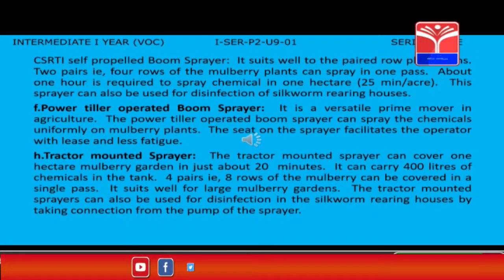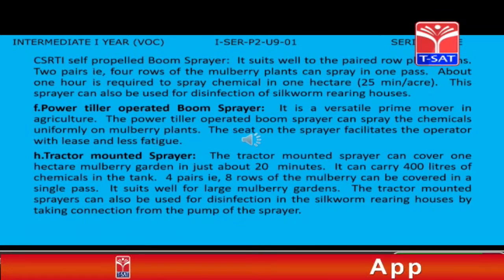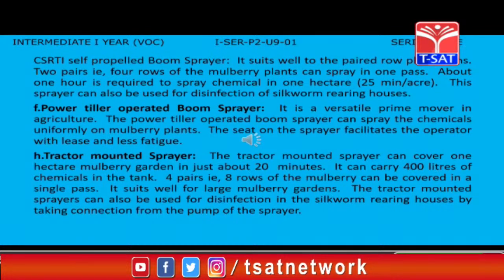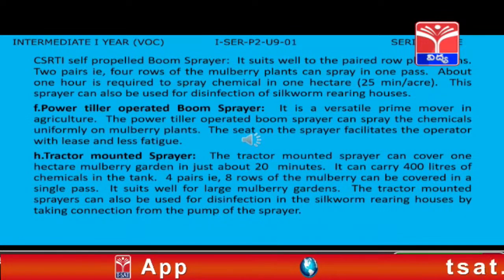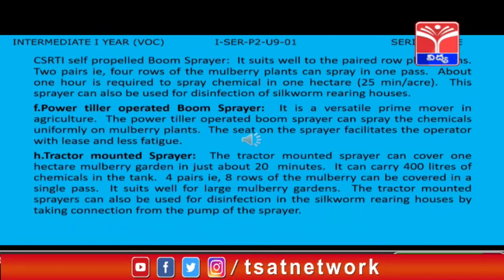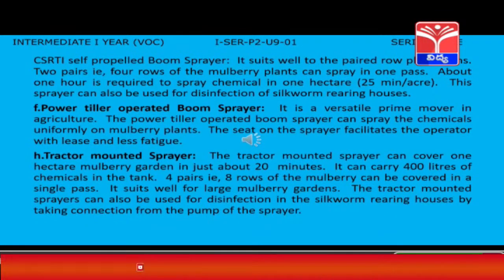Power-Tiller Operated Boom Sprayer: The power-tiller is a versatile prime mover in agriculture. The Power-Tiller Operated Boom Sprayer can spray chemicals uniformly on mulberry plants. The seat and sprayer facilitates the operator to work with ease and less fatigue. Tractor Mounted Sprayer: The tractor mounted sprayer can cover one hectare of mulberry garden in just about 20 minutes. It can carry 400 liters of chemicals in the tank. Four pairs, i.e. eight rows of mulberry, can be covered in a single pass. It suits well for large mulberry gardens and can also be used for disinfection in silkworm rearing houses.